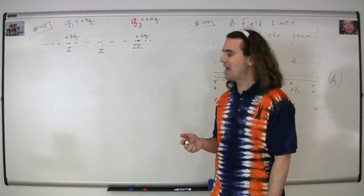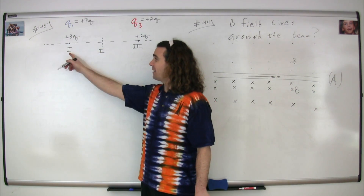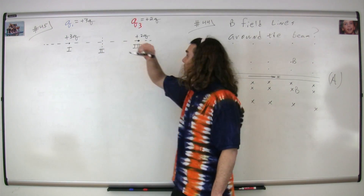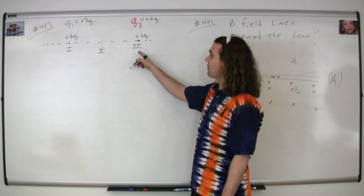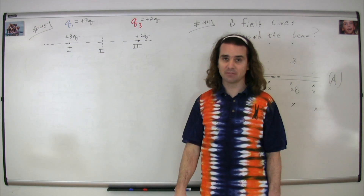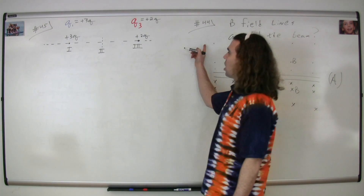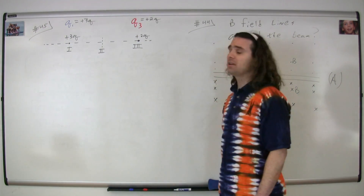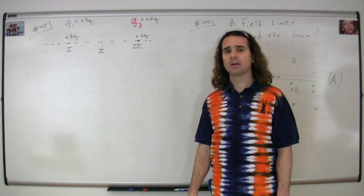Question 45. We have what I'm going to call charge one, located at position one, which has a charge of positive three. And we have what I'm going to call charge three, located at position three, which has a charge of positive two. The question is: where along this line, other than at infinity, will the net electric field be equal to zero?